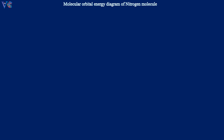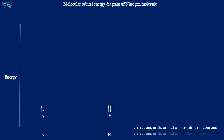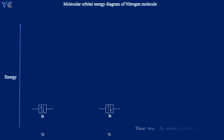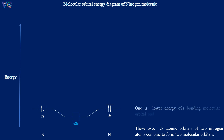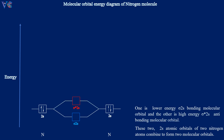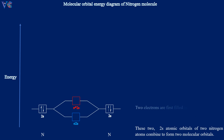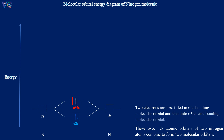Molecular Orbital Energy Diagram of Nitrogen Molecule, shown from the 2S level. Two electrons in the 2S orbital of one nitrogen atom and two electrons in the 2S orbital of another nitrogen atom. These two 2S atomic orbitals of two nitrogen atoms combine to form two molecular orbitals — one is the lower energy σ2S bonding molecular orbital, and the other is the high energy σ2S antibonding molecular orbital. Two electrons are first filled into the σ2S bonding molecular orbital, and then into the σ2S antibonding molecular orbital.